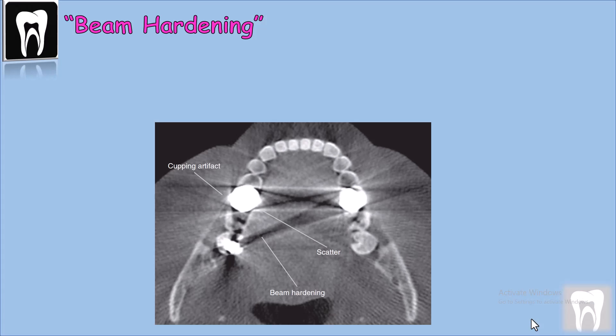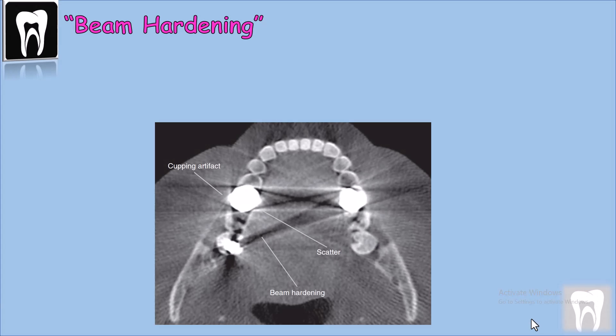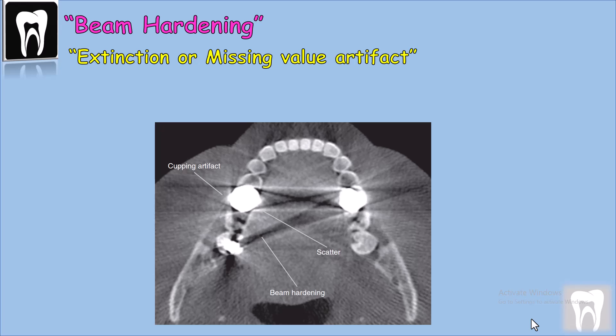The streak and dark band artifact happens between two dense objects, such as dental implants and dental restorations. These can also be called extension artifacts or missing value artifacts. The hardened x-ray beam effectively burns that part of the image, manifesting as dark strips between two highly dense structures.